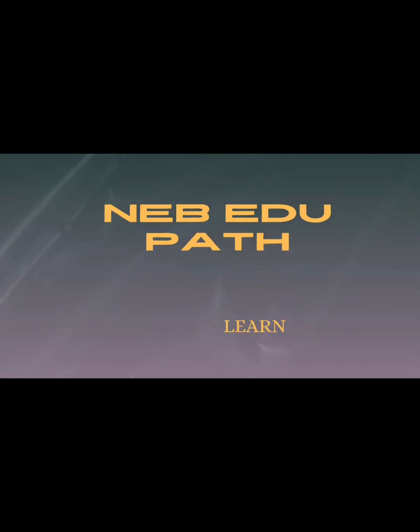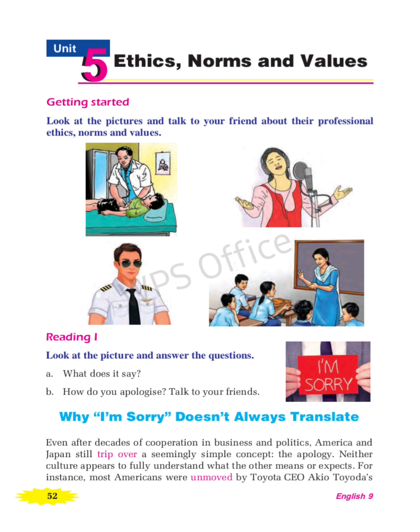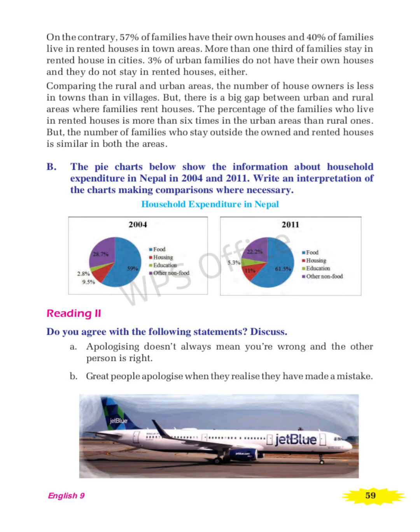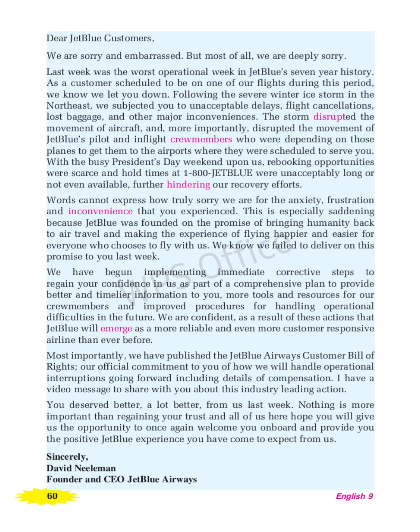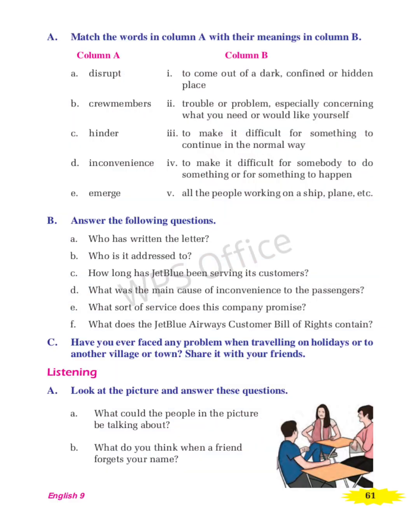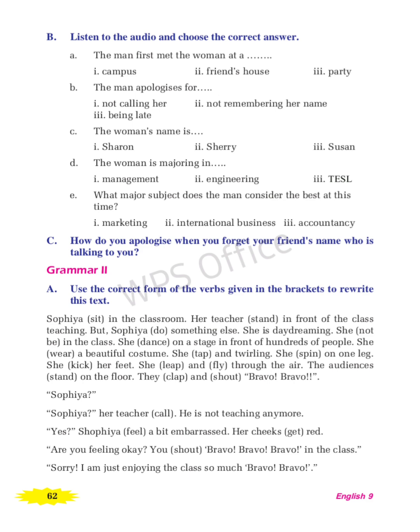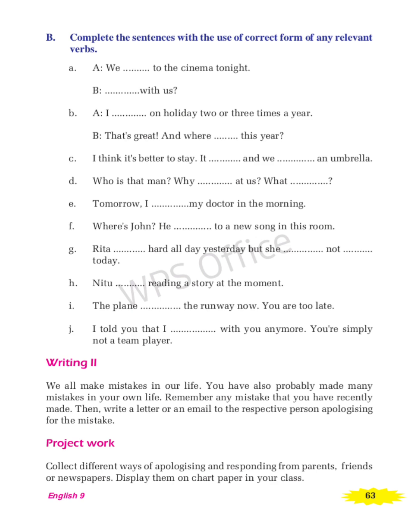Hello and welcome to my channel, fellow learners. Today we're delving into Class 9 English, Unit 5, Reading 2: Apology of JetBlue Airlines — Exercise Solution. If you find value in our discussions and solutions, make sure to hit that subscribe button below and turn on the notification bell so you never miss out on our upcoming lessons and helpful content.